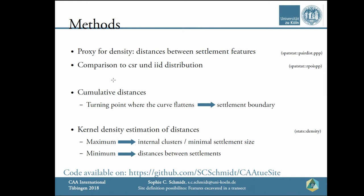My methods. I worked with the spatstat package of R, which offers the possibility to create point pattern datasets within a window that can take complex forms — needed because the trench boundaries are defined by multiple polygons. After subsetting my points for different periods, I calculated the distances between features within each period. These distance vectors are the basis for all further calculations, always cropped at a distance of 1,000 meters, as beyond that the scale becomes too large for site detection. For comparison, I created a complete spatial random, i.i.d. point distribution within the excavated areas. Two approaches are used: a cumulative one to get outer boundaries, and a density approach to show minimal settlement sizes or clusters.